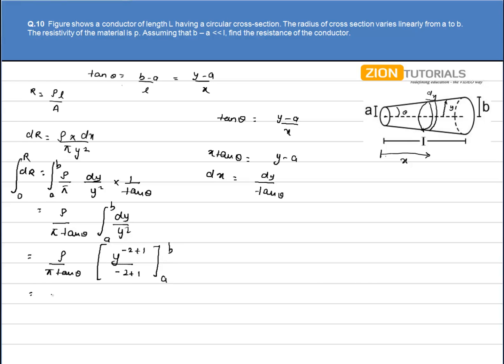So we have minus ρ by π tan theta times 1 by y from a to b. We have ρ by π tan theta times (1/a minus 1/b). Now substituting the value of tan theta...